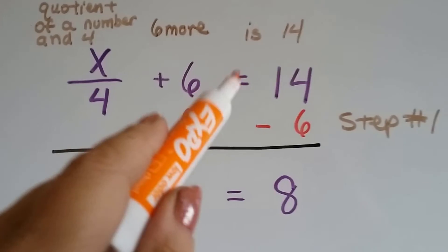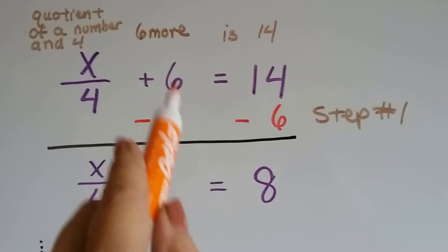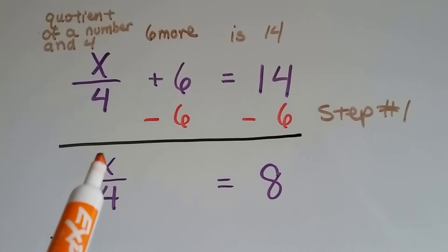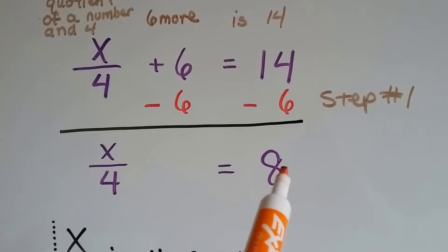So the first thing we're going to do is get rid of this 6. We subtract 6 from both sides and we get x over 4 equals 8.